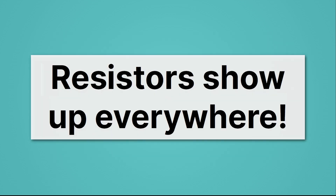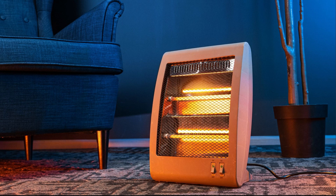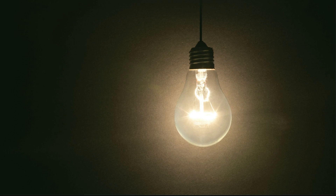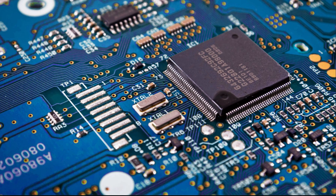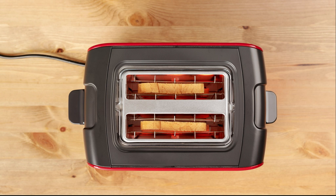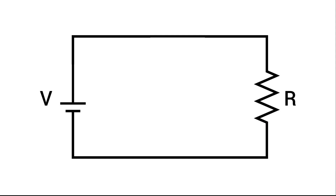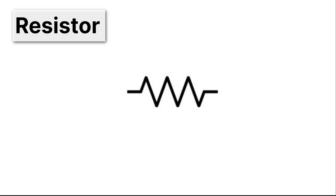Resistors show up everywhere — not just in your humble toaster, but also in things like space heaters, which provide warmth with a resistor, and in old-school incandescent light bulbs, which produce light with a resistor. Resistors also show up in microchips, where they provide an important tool to adjust the voltage or current in your circuit. So our toaster is a resistor. In a circuit diagram, the voltage source is on the left, and that squiggly line on the right represents a resistor.